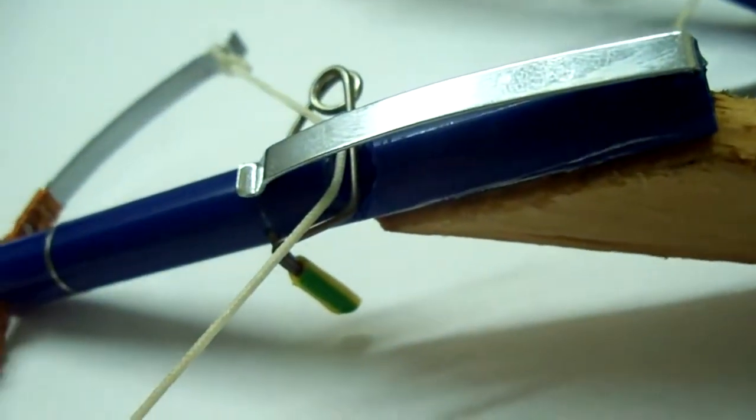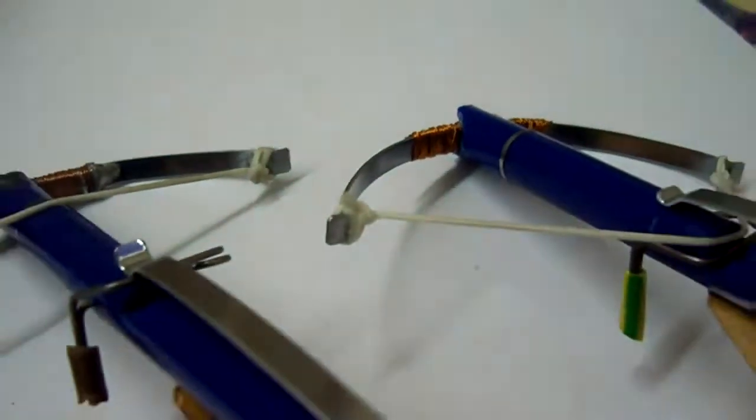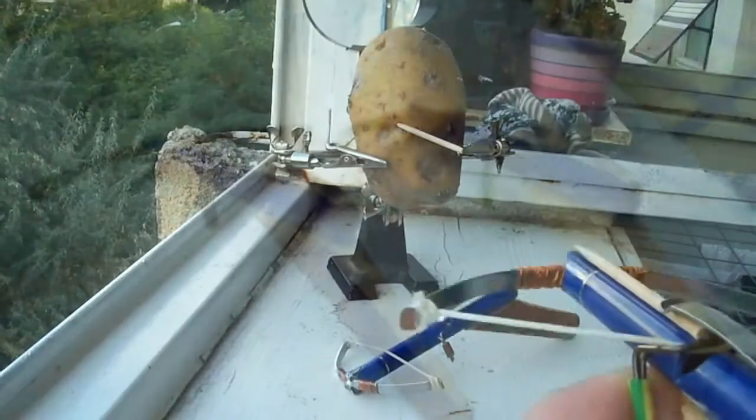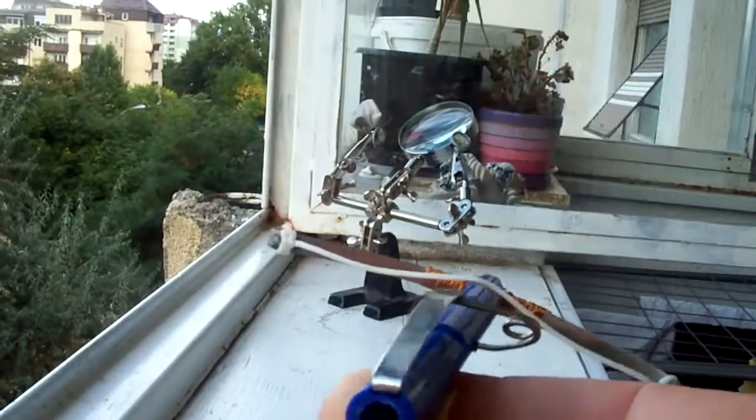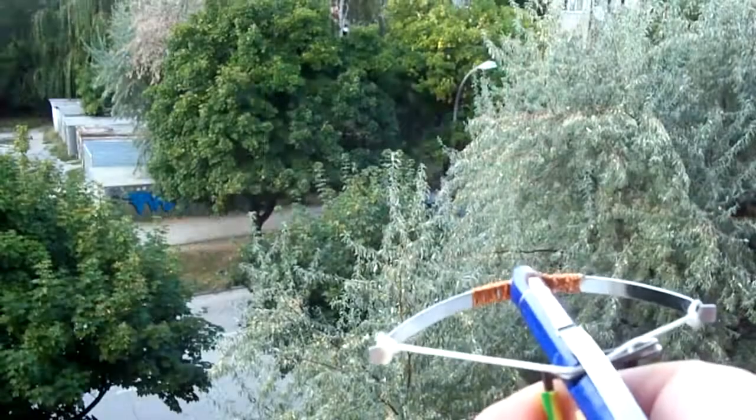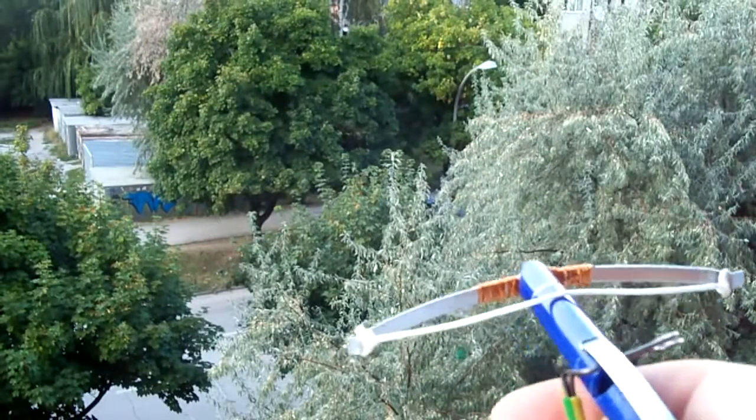This kind of crossbow can shoot matches and toothpicks. You can pop balloons, shoot targets, and launch wooden matches over 20 feet away. In this project, we turn an ordinary pen into a mini crossbow.